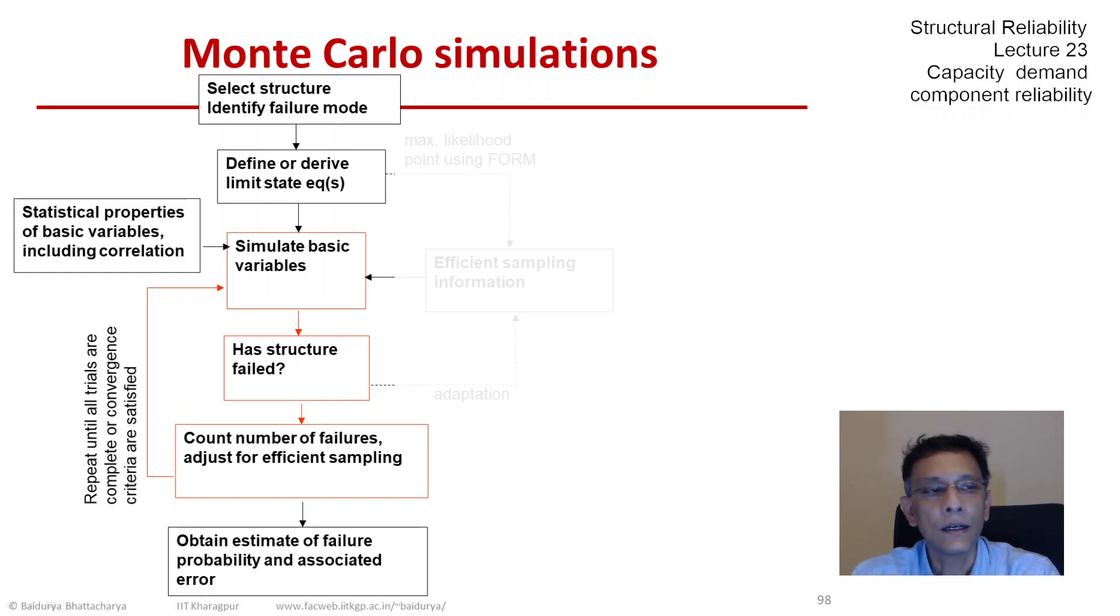On the left you see the need to input the statistical properties, so that's something we need to keep in mind. And then once we are done with all of this, the estimated failure probability would be the average of these counts.